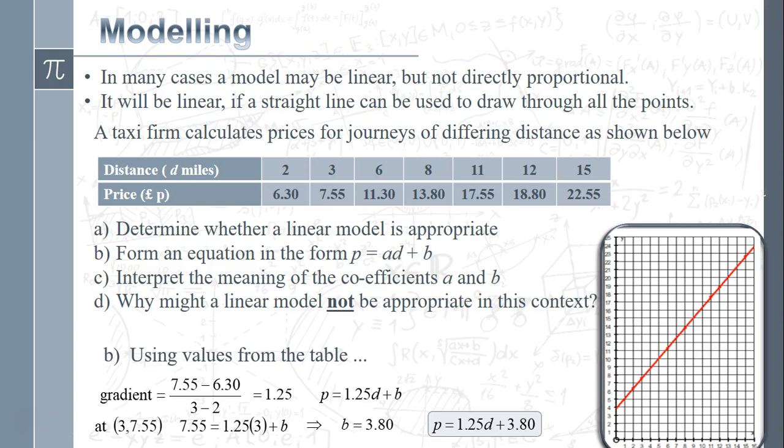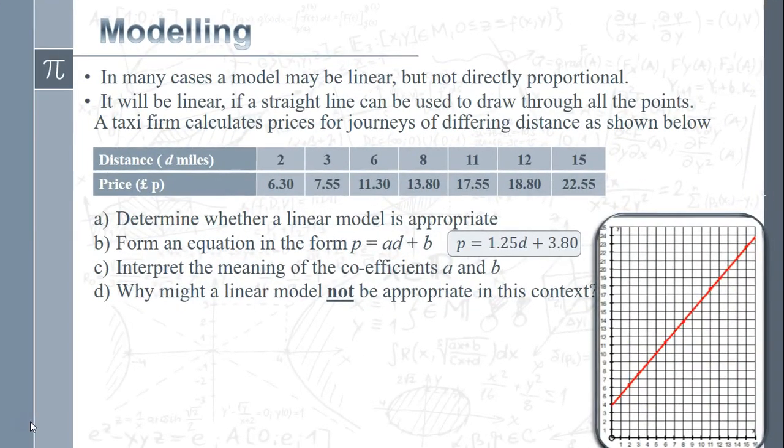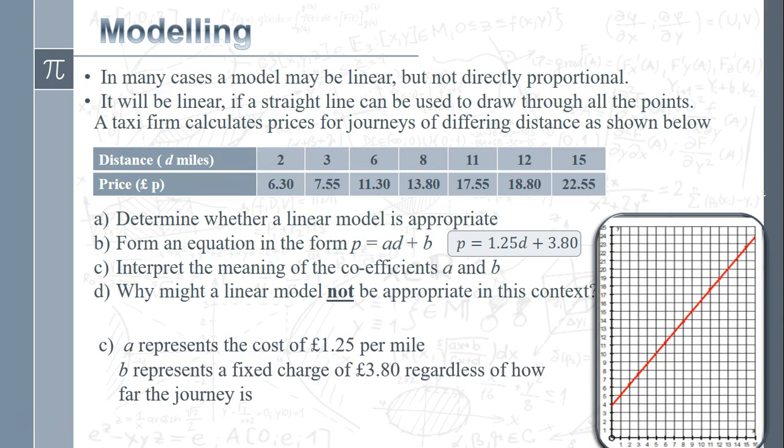Interpret the meaning of the coefficients a and b. What do our values of 1.25 and 3.80 mean in this context? The 1.25 is our gradient - for every one mile increase in distance traveled translates to a one pound 25 increase in the price. So a represents a cost of 1.25 per mile. For b which is the 3.8, if we've got a journey of zero miles we're still going to get charged three pound 80, so that is a fixed charge irrespective of how far the journey is.